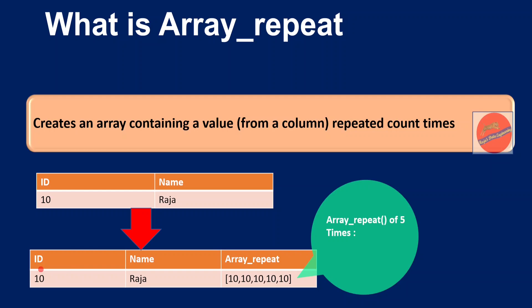Now let us get into the use case. My use case is to create test data using this function. Before that, let me explain the syntax of arrayRepeat. For a dataframe df, I am going to create a new column. Within arrayRepeat we have to mention the column based on which we want to create the array value, and how many times we want to repeat it.